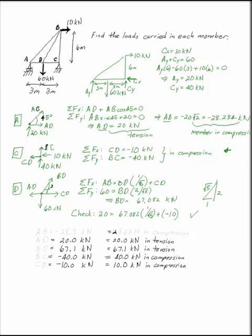So now we have found all of our members: AB, AD, BD, BC, and CD. It's really up to you. You can answer the question by saying AB is minus 28.3 kilonewtons, or quite equivalently you can say 28.3 kilonewtons in compression. Just make sure you don't say negative 28 in compression because then you've confused the issue again.